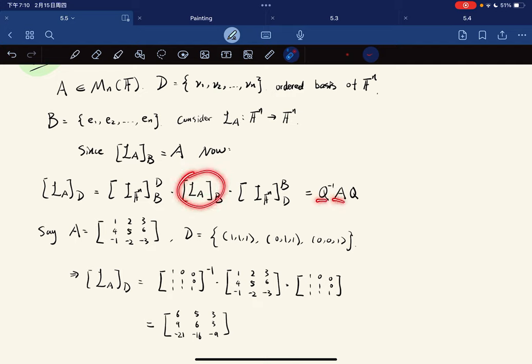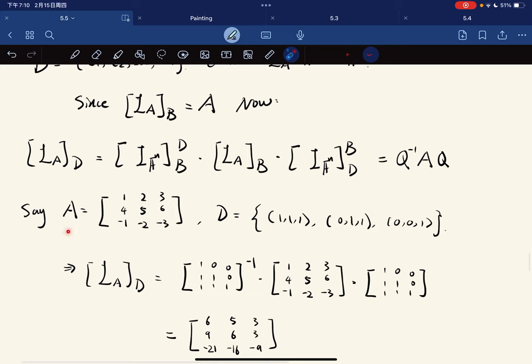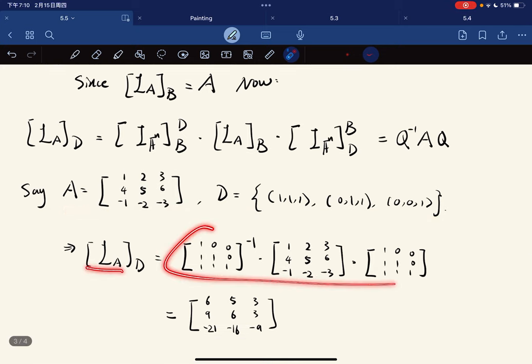Here's a more concrete example: if A equals this and D equals this, [L_A]_D gives you this, which can be computed directly.